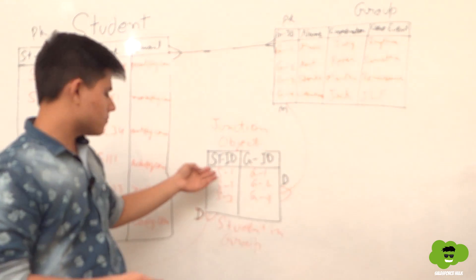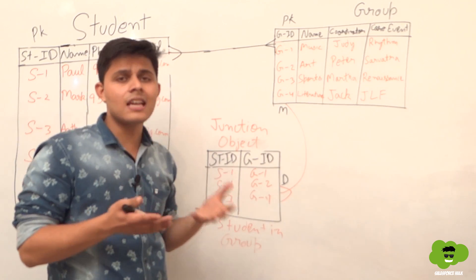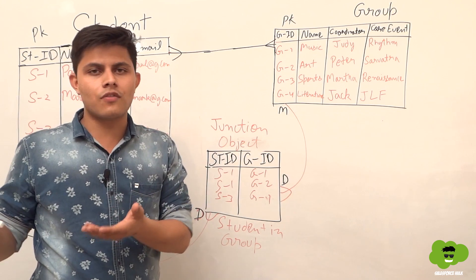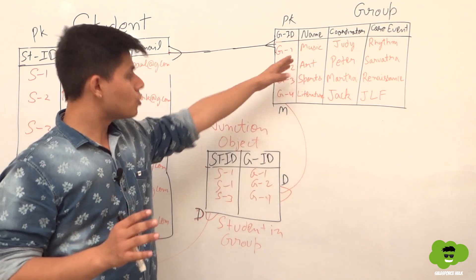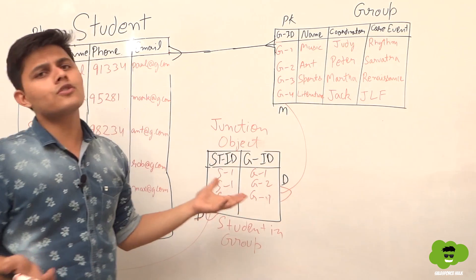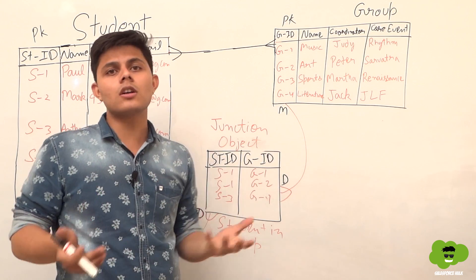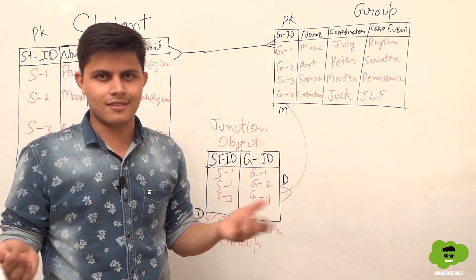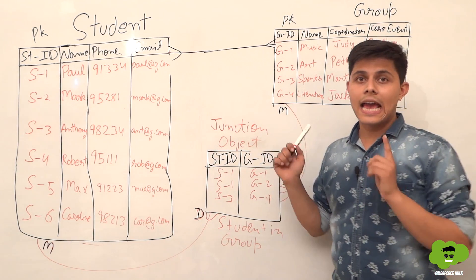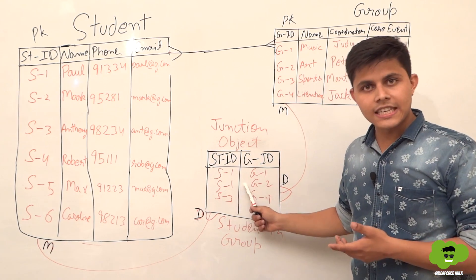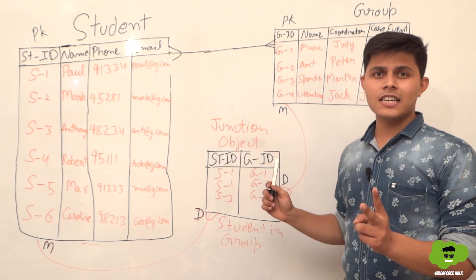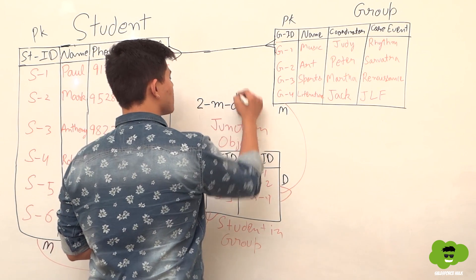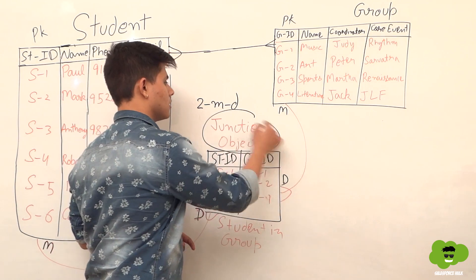This makes sense: if the student's information is not in the database, there's no use storing which group they were enrolled in. The same applies to group — if you delete a particular group, there's no use storing which students were enrolled in it. Hence, both relationship fields will be master detail, and this junction object is the detail object for both relationships. Both master detail relationship fields are created on the student-in-group object. Any object that has two master detail relationship fields on it is called a junction object.